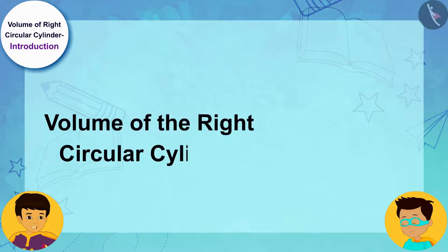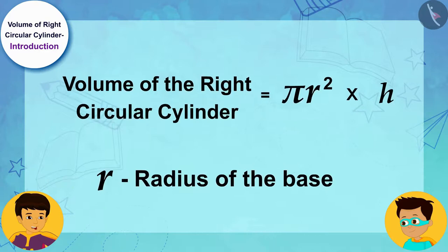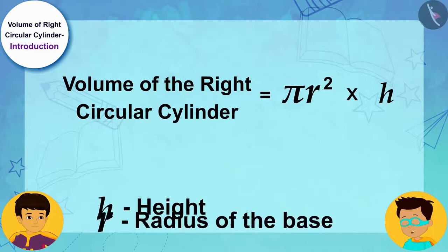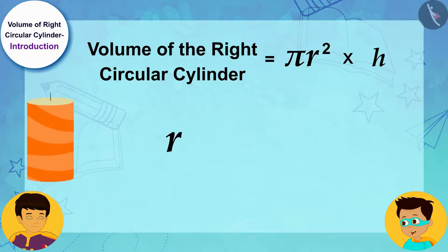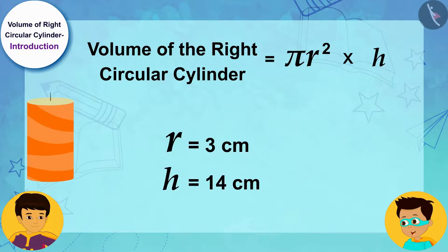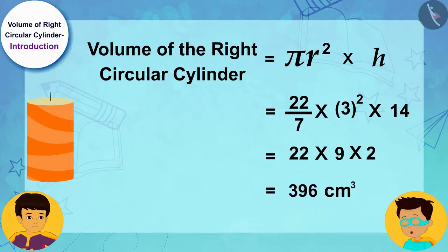The volume of a right circular cylinder is equal to π r² h, where r is the radius of the base and h is the height of the right circular cylinder. Now, substituting the radius of the base of the candle as 3 centimeters for r and the height of the candle as 14 centimeters for h, the volume of each candle is 396 cubic centimeters.